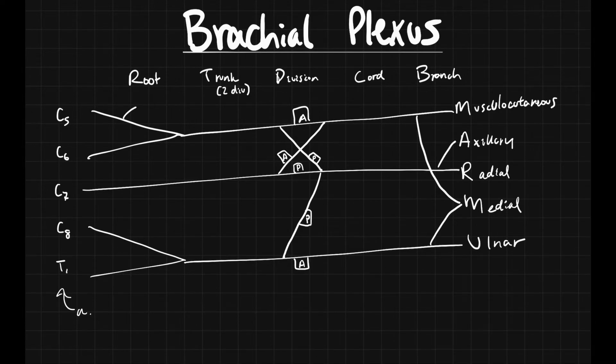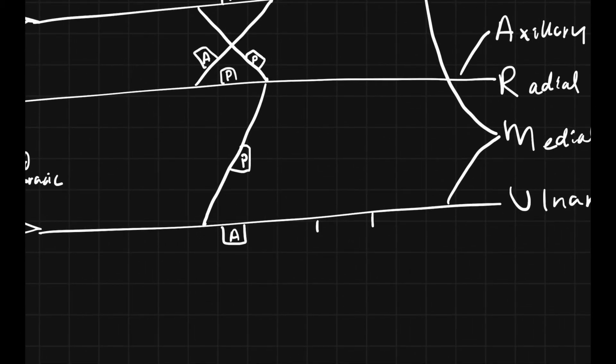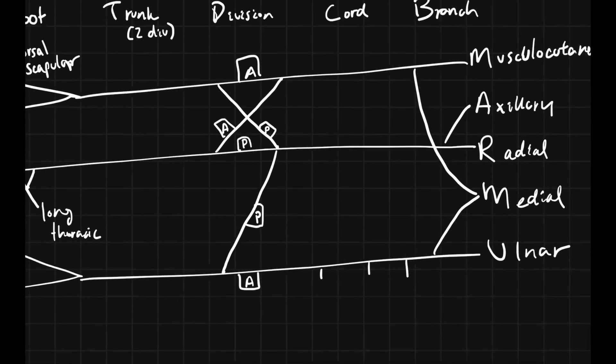You're going to have a dorsal scapular nerve right here. You're going to have a long thoracic nerve here. You're also going to have three different nerves coming out of your cords.